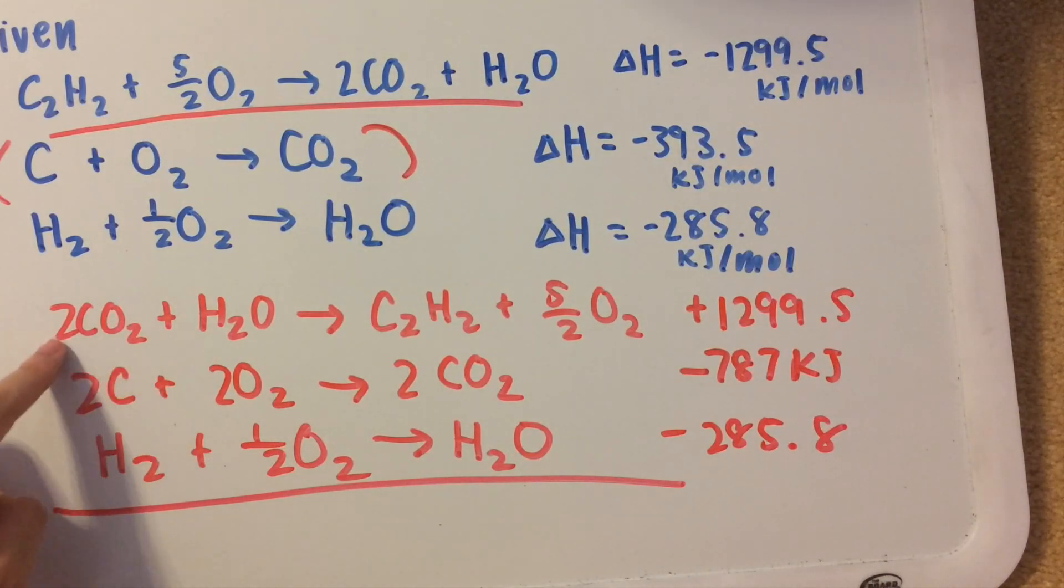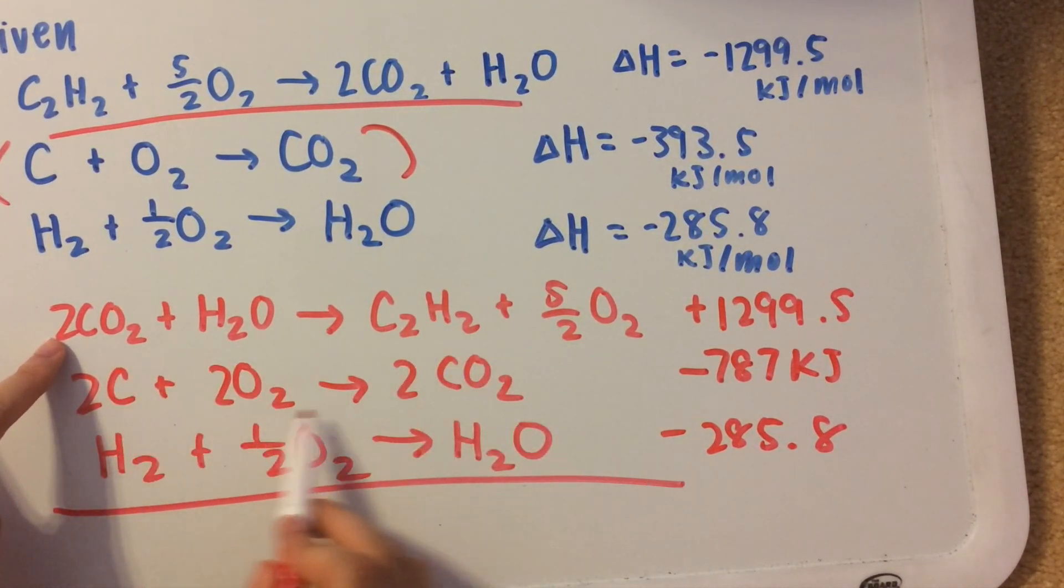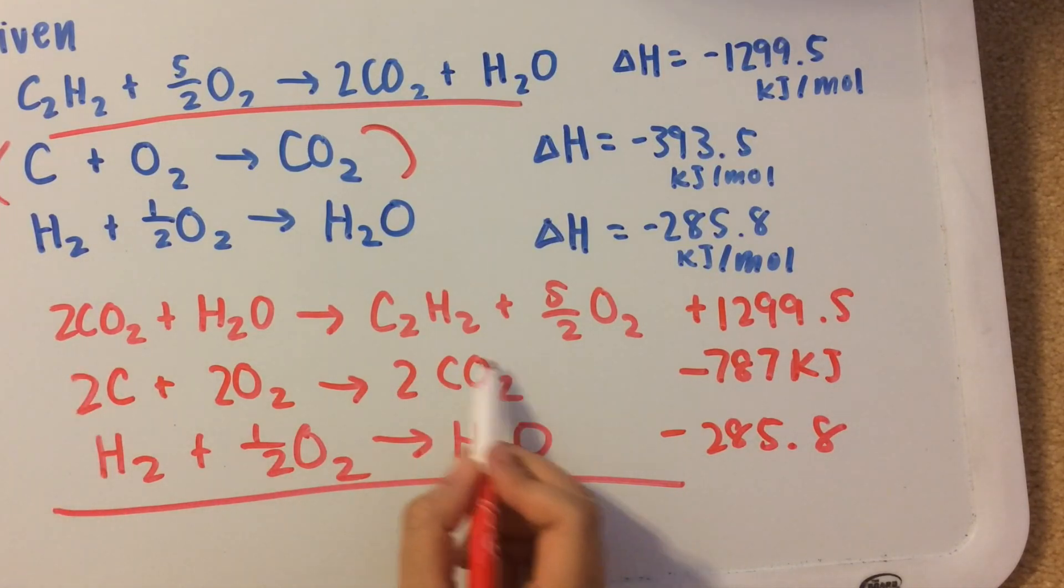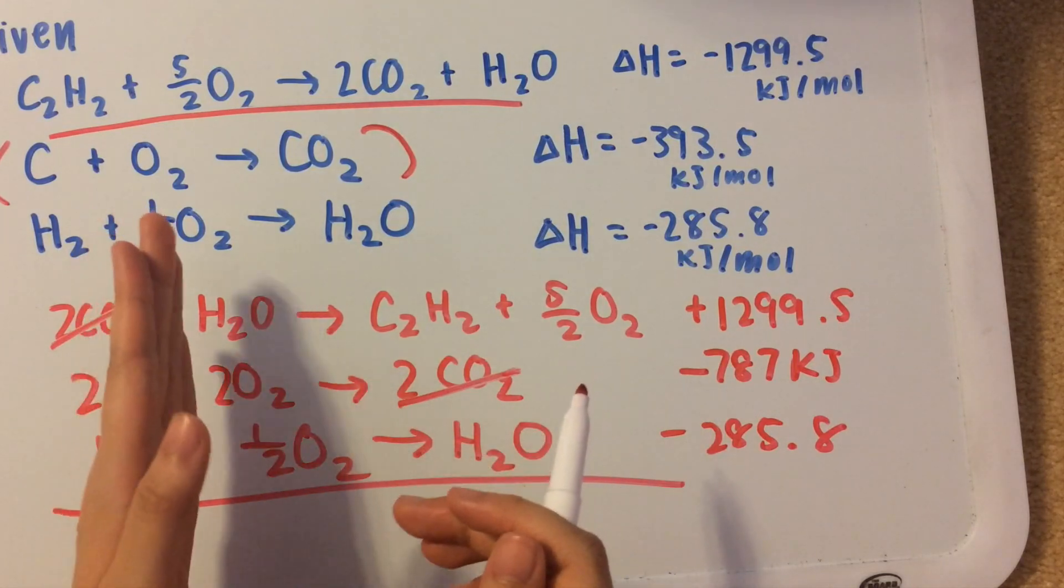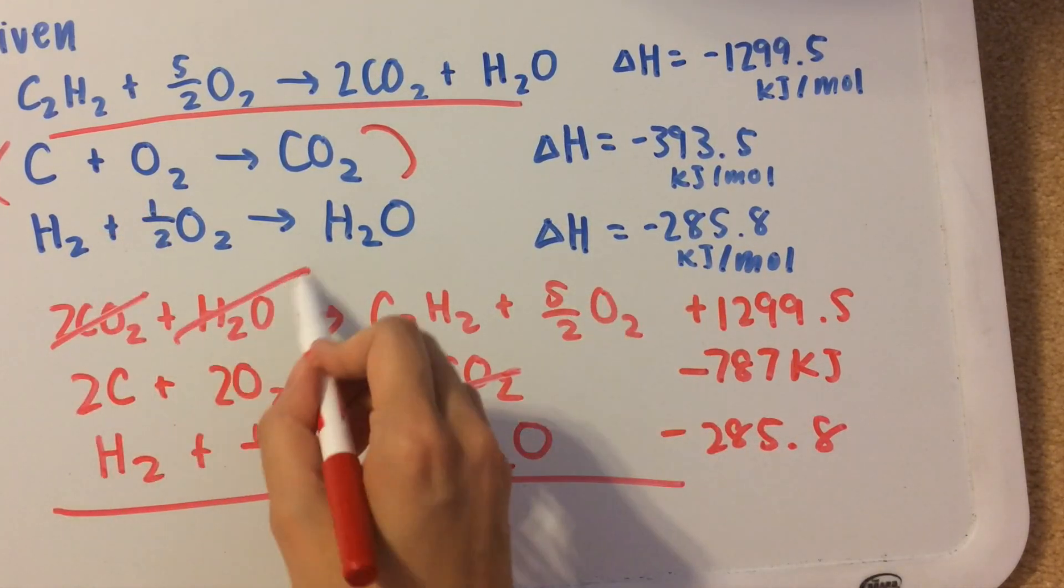So I see 2CO2 over here. Is there any other place where we have CO2? Yes, it's over here. So these two cancel out because they're on opposite sides of the equation. Now I have H2O. I have another H2O over here. And since this one's on the left, this one's on the right, they cancel out.